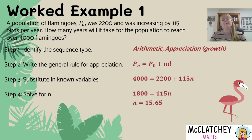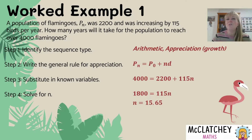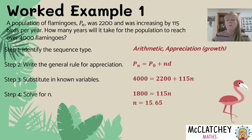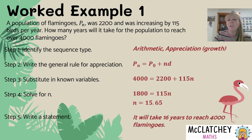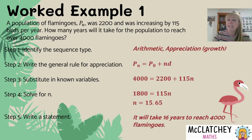Rearranging our algebra and solving for N: we take 2,200 from both sides, then divide both sides by 115, and find N equals 15.65 years. You could give the exact answer of 15.65 years, though it's better to convert to years and months for more precision. However, since we're asked for just years: at year 15, the population hasn't quite reached 4,000 flamingos, but at year 16, it will definitely be at 4,000. So the answer is the end of year 16. It's technically 15.65, but for a final answer it's good to give a rounded finish — that's why you always write a statement at the end.